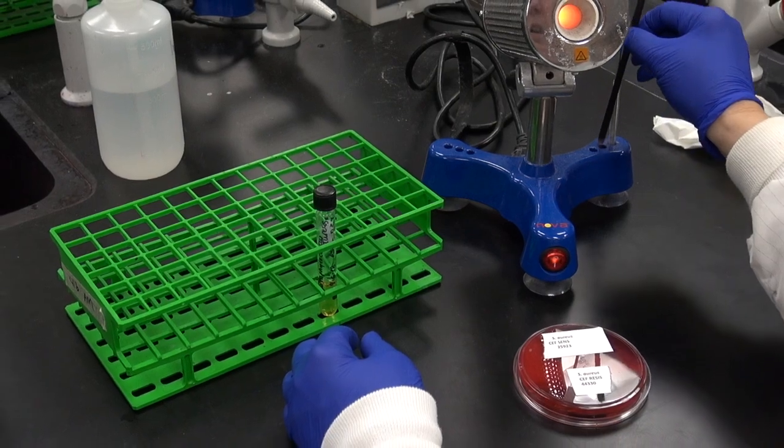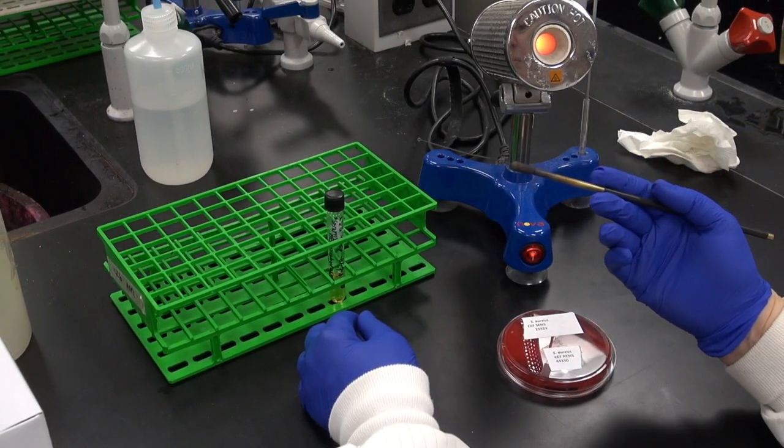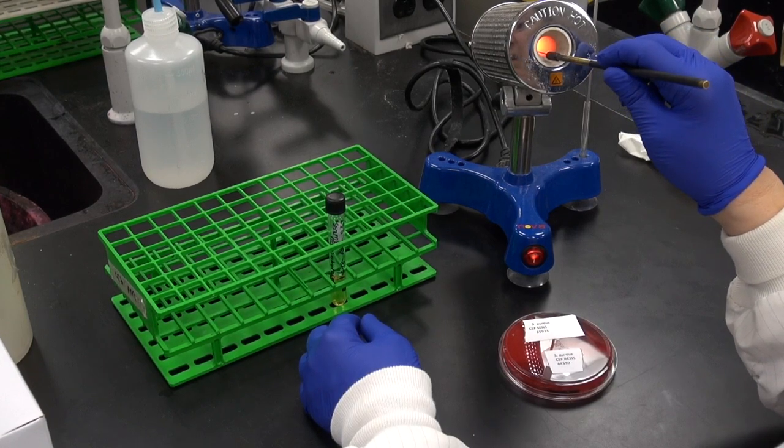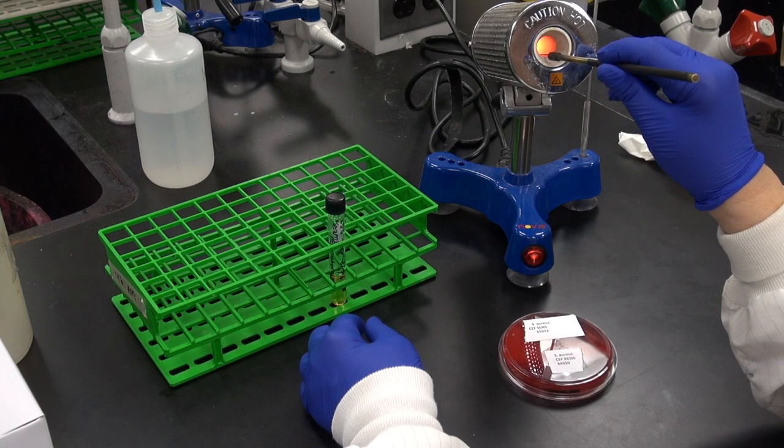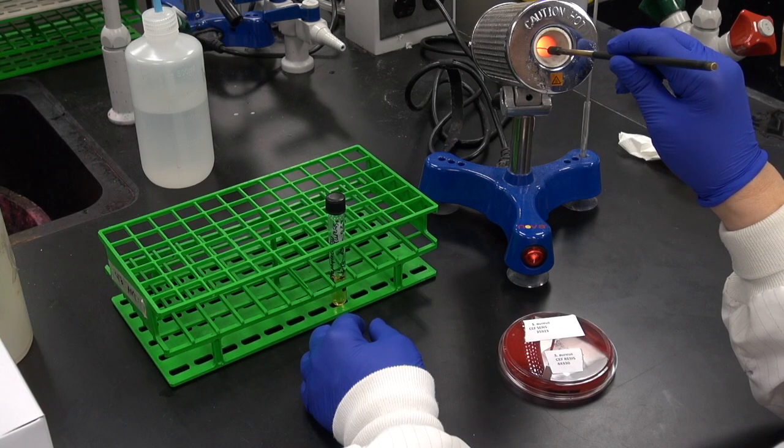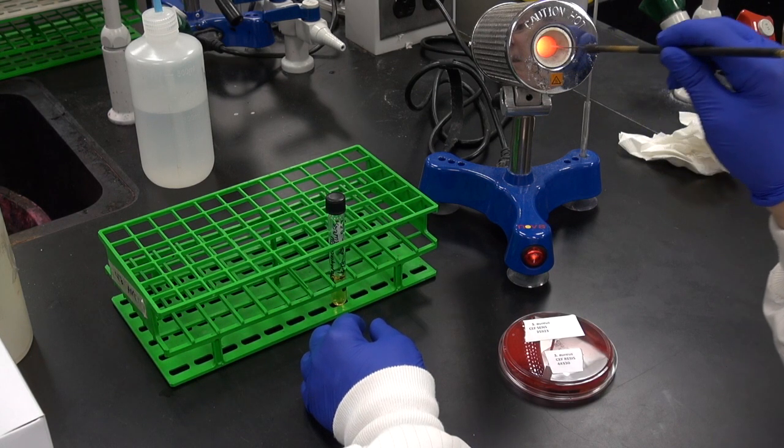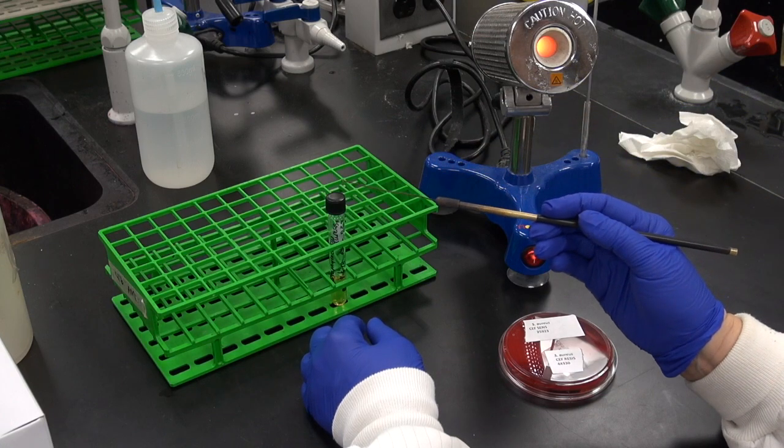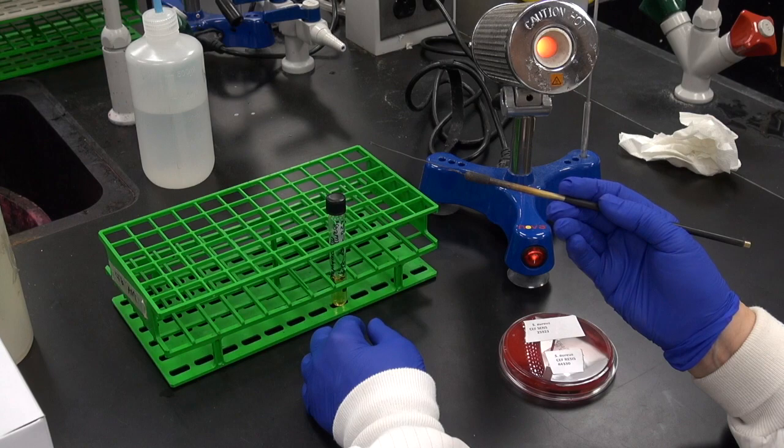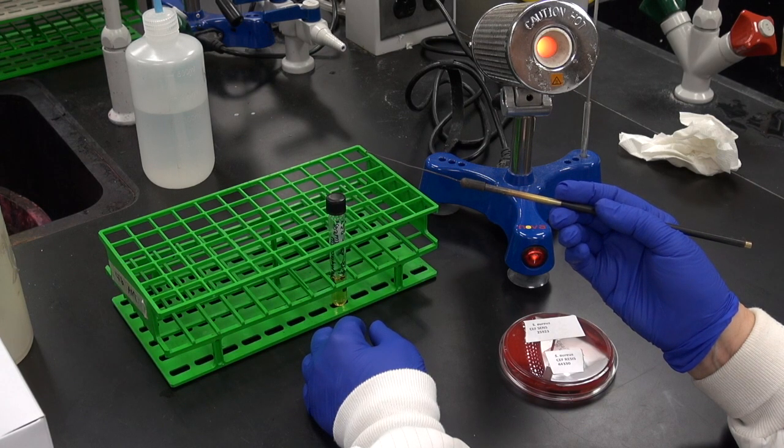We're using a bacteriological loop for this procedure and we start by sterilizing it in the incinerator. Sterilize the length of the wire by heating it until it glows orange. Then remove the loop from the incinerator and allow it to cool so that it doesn't kill on contact the bacteria you're trying to transfer.